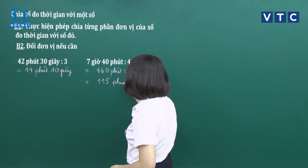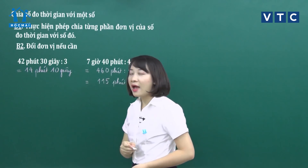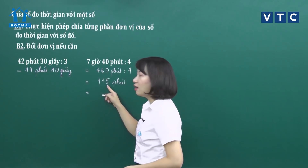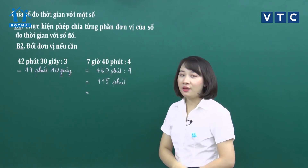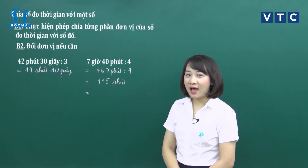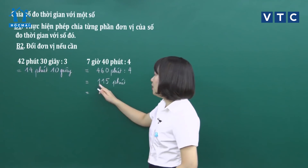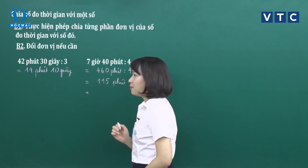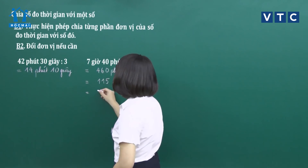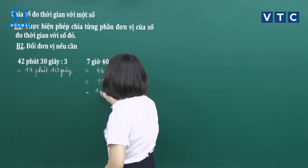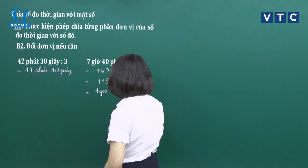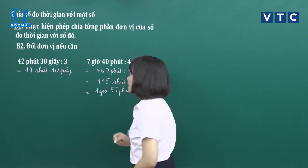Đến đây các con có thể để nguyên đơn vị là phút. Hoặc nhận xét thấy 115 phút lớn hơn 60 phút thì có thể đổi ra giờ: lấy 115 chia 60 được 1 giờ và dư 55. Kết quả thu được là 1 giờ 55 phút.